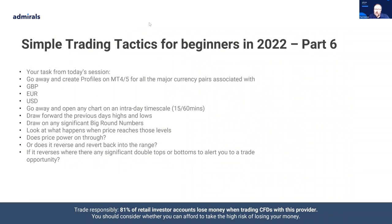Here's some homework: go and create those profiles on MT4 or MT5 for all the major currency pairs associated with pound, euro, and US dollar. On any intraday chart, draw in the previous days' highs and lows — there are free indicators that can do this automatically. Look at significant big round numbers and see what happens when price reaches those levels. Did it power through or reverse? If it was reversing, was it creating double tops or bottoms? Practice, practice, practice — practice makes perfect.